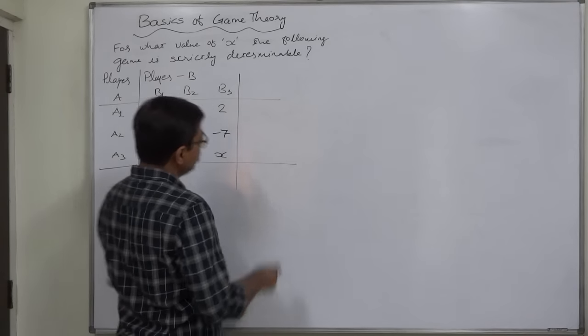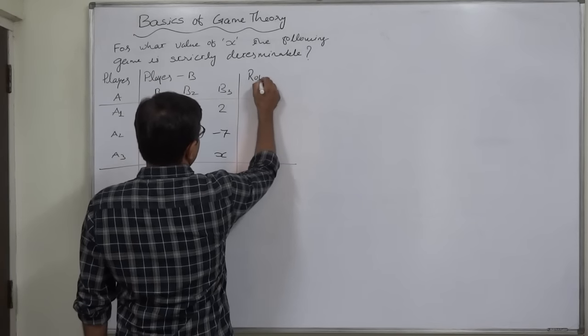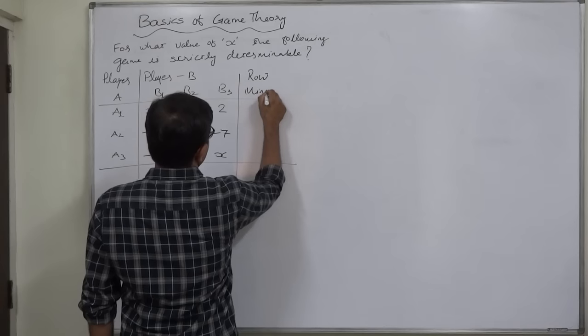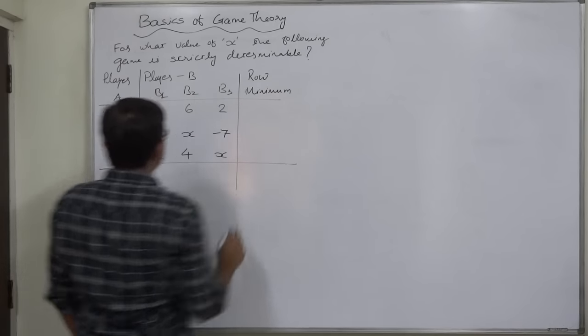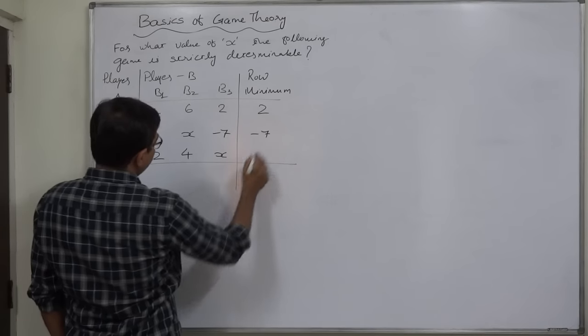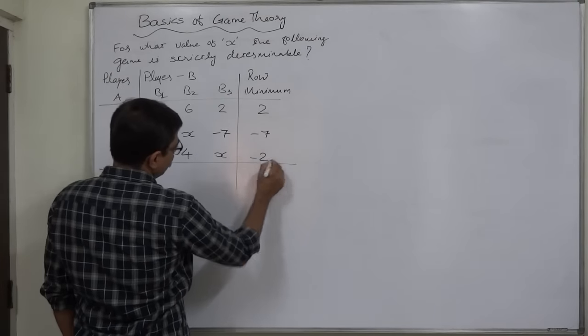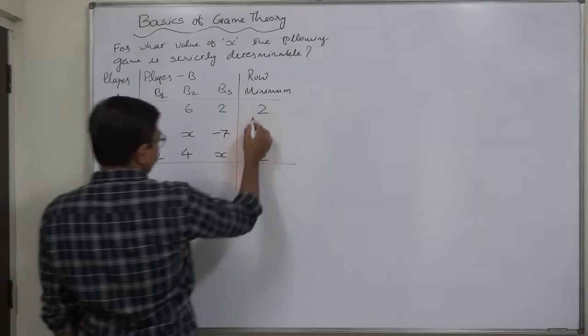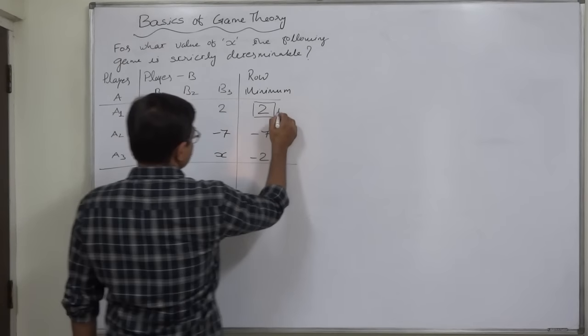First of all, let us examine the present situation. Let us take row minimum. Ignoring X, in the first row minimum is 2, in the second row minimum is minus 7, and in the third row minimum is minus 2, out of which 2 is the maximin value.